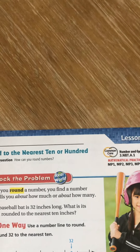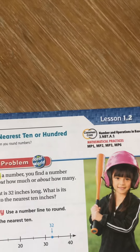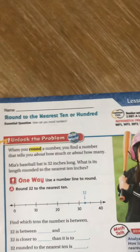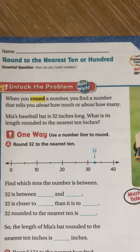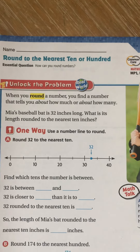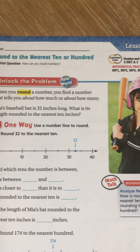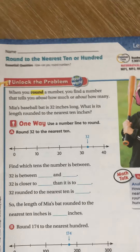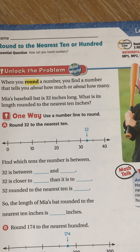Chapter one is about odd and even numbers, adding and some subtraction, and also rounding. So we've been learning a lot about place value, so we can now move on to this. At the top it says round to the nearest 10 or hundred — again, that's part of the learning target. How can you round numbers? You're either going to round to the nearest 10 or the nearest hundred.